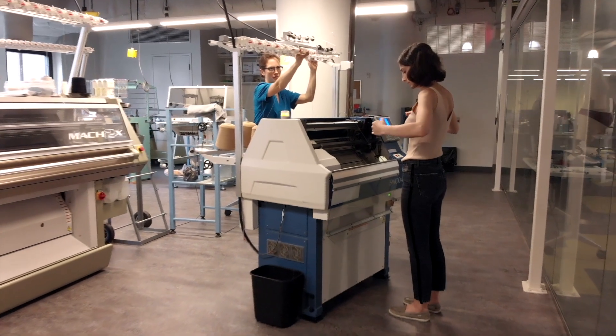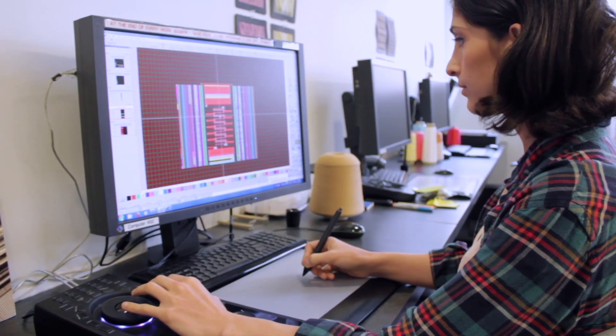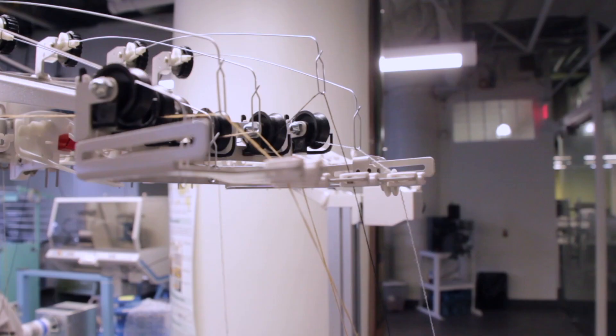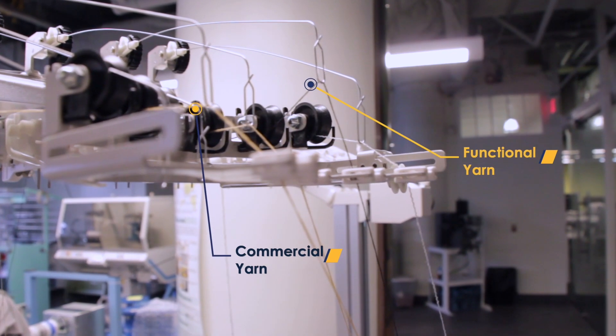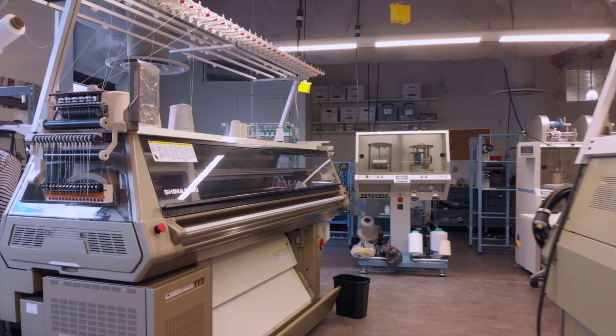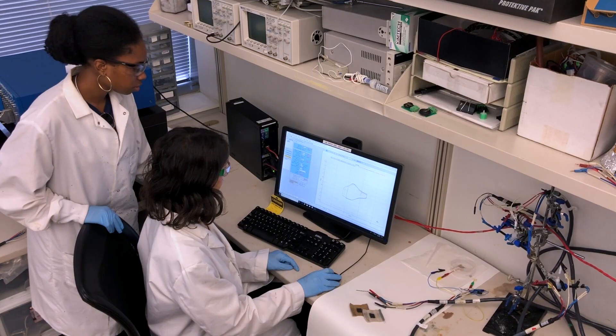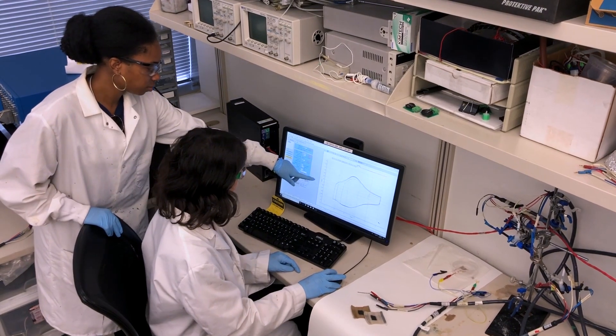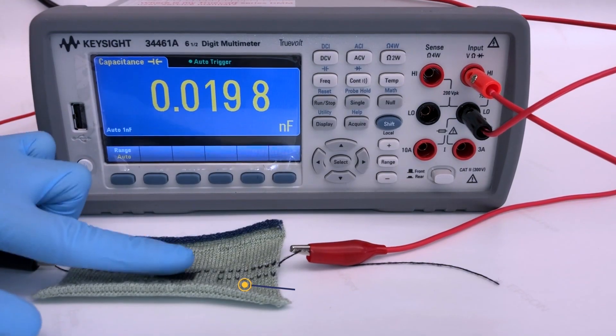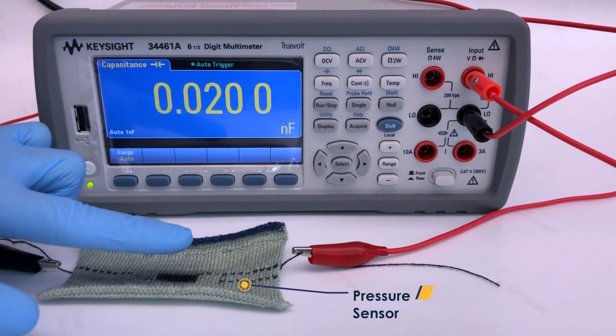The challenge in creating a smart textile begins with the design of the functionalized yarns. The threads need to be as strong as a commercial yarn so that it can be used in industrial knitting machines anywhere in the world. On the other hand, we need to ensure that the materials that go into the yarn are still functional for the desired application.